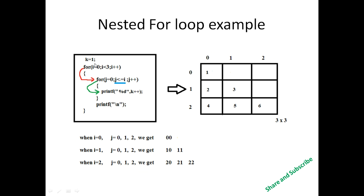Here is another pattern where the value of k equals 1 inside the loop. Each time the outer loop and inner loop are executed, the value of k is incremented, and we print k equal to 1, 2, 3, 4, and so on.